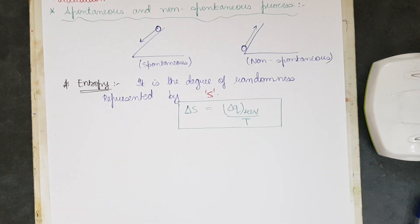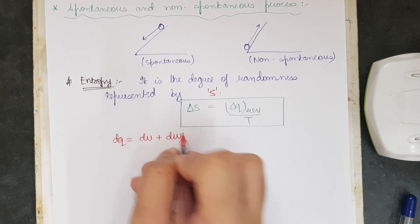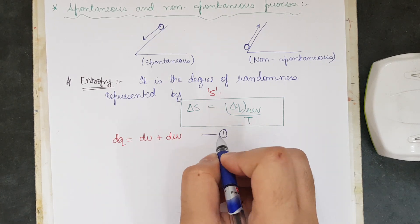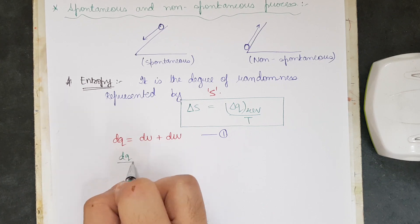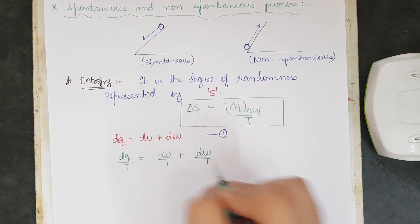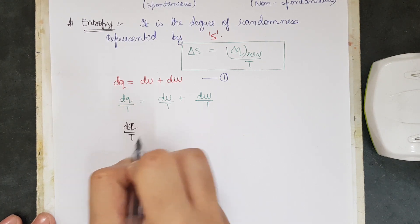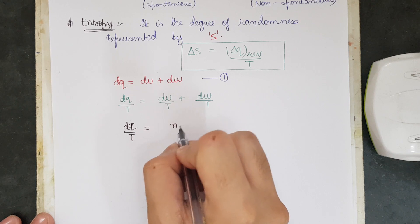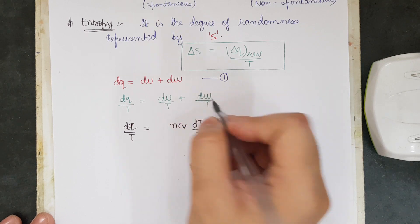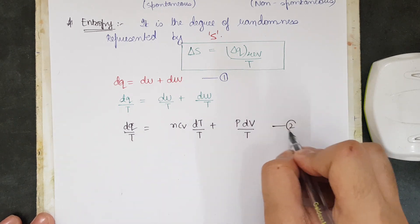Let us begin with the first law of thermodynamics, which we have already learned: DQ equals DU plus DW. Now dividing both sides by temperature T, we get DQ/T equals DU/T plus DW/T.